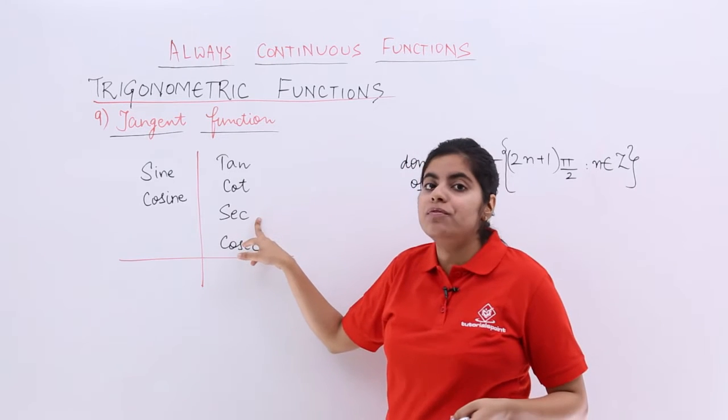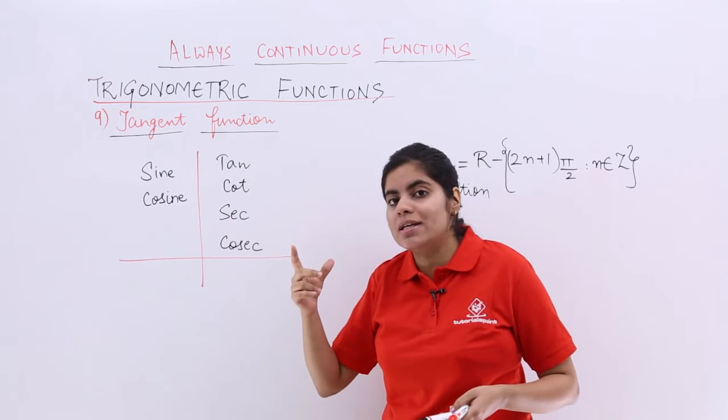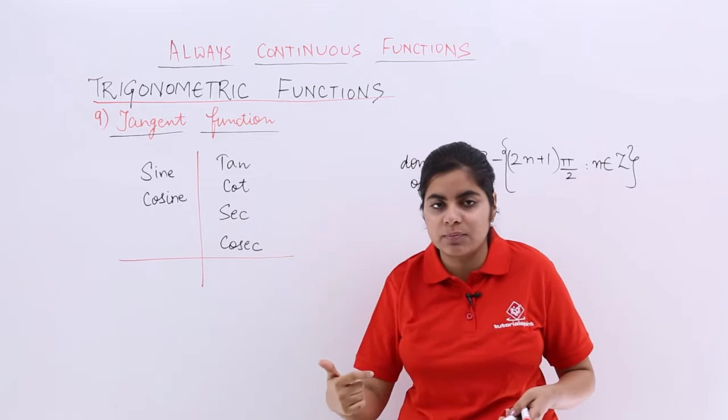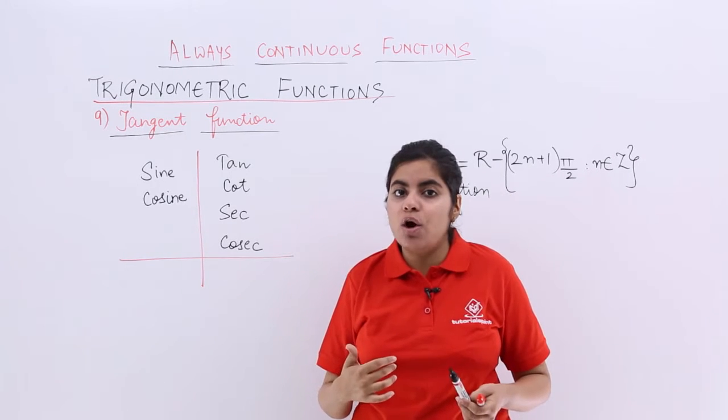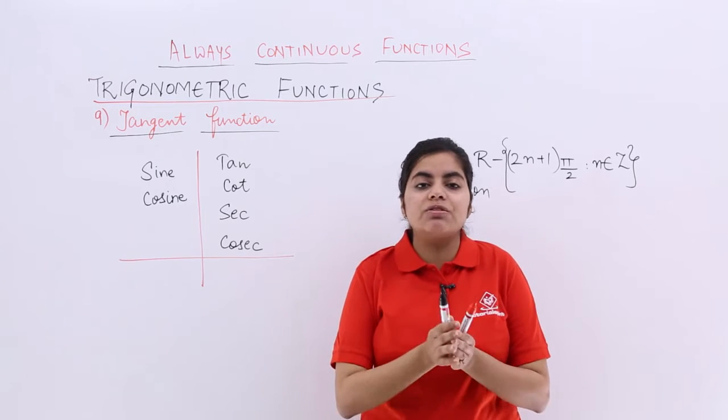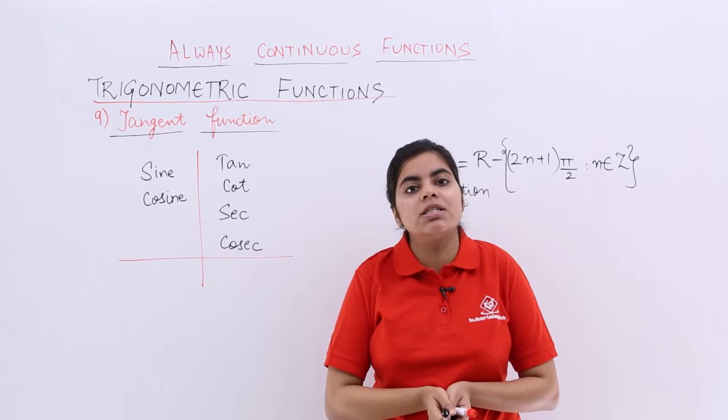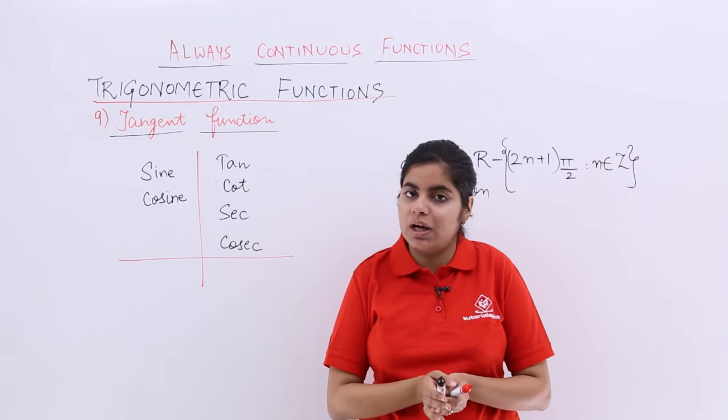Similarly, what is the value of sec in respect to cos? Sec is 1 upon cos. Now what is the value of secant 90? It is 1 upon cos 90 which is 0, 1 upon 0. Again not defined.